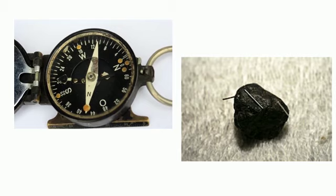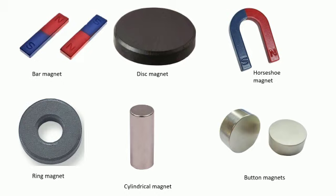A magnet that is found in nature is called magnetite. People in ancient China and Europe knew that if a piece of magnetite is hung freely, it always settles in the north-south direction. These rocks came to be used for finding directions while traveling through unknown regions, which is why they are called lodestones. This led to the invention of the mariner's compass.